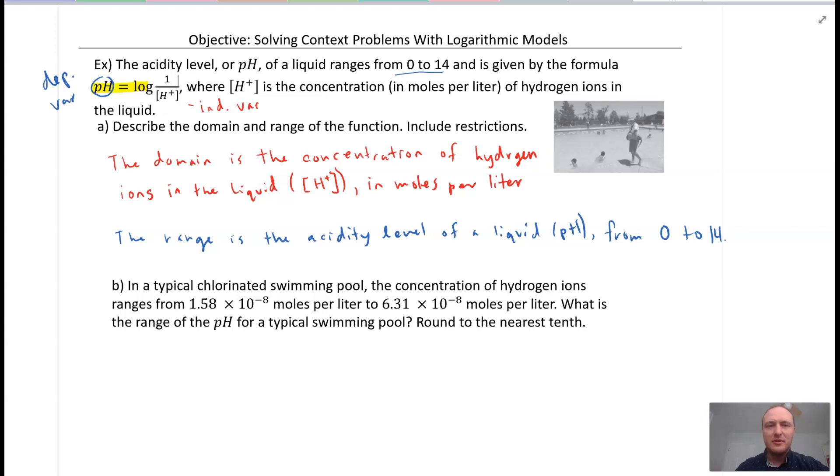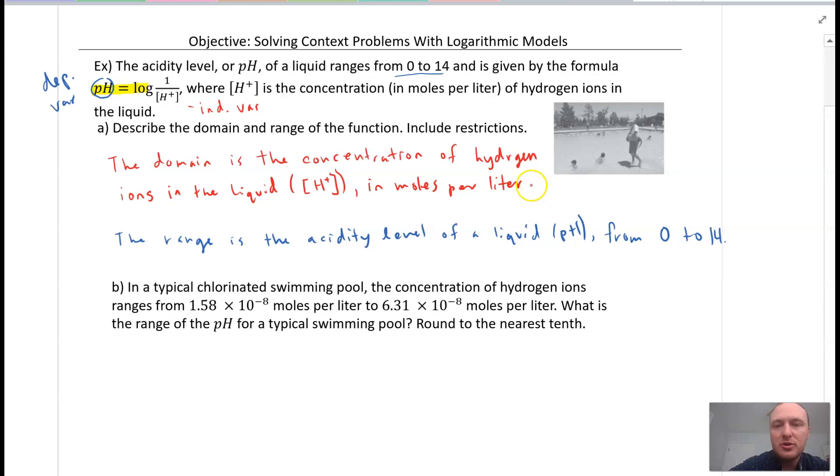So we're going to have to make the denominator smaller to get a bigger output. So 1 is actually going to be our upper bound. And then our lower bound, what value can H+ not be? Well, it can't be 0, right? So that's our restrictions. So 0 to 1 in moles per liter where 0 is less than H+, which is less than or equal to 1.